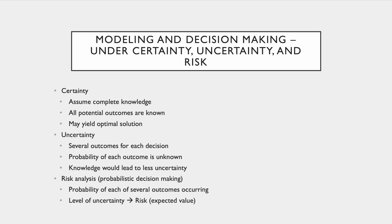How do we model under uncertainty, certainty, or risk? Modeling under certainty means we have complete knowledge, all potential outcomes are known, and we may yield an optimal solution — but let's face it, we never have complete knowledge. For our homework assignment, we're actually going to model under certainty with information that's known and won't change. Under uncertainty, several outcomes exist for each decision, and the probability of each outcome is unknown, so there's a likelihood that something could go a specific way.